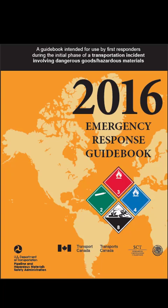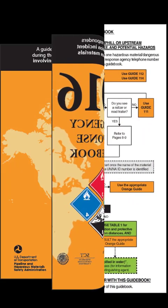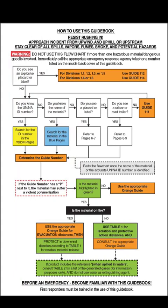The Emergency Response Guidebook, known as the ERG 2016, provides information for first responders during the critical initial phase of a dangerous goods or hazardous material incident. This tutorial is based on the How to Use This Guidebook flowchart, located on page 1 of the current print version of the ERG. Let's get started with an overview of the iOS version.